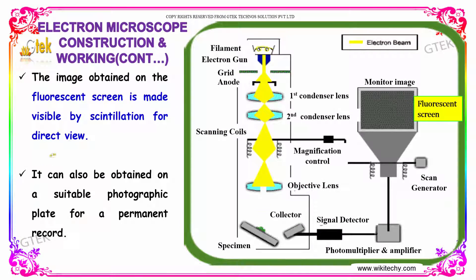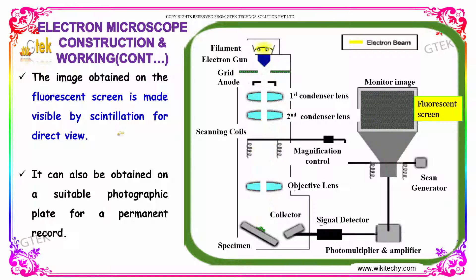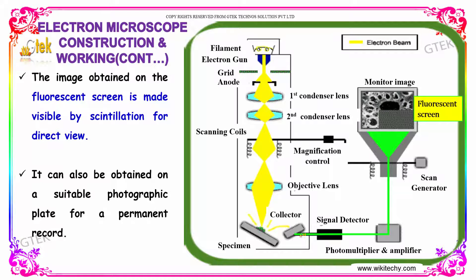The image obtained on the fluorescent screen is made visible by scintillation for direct viewing. It can also be recorded on a suitable photographic plate for a permanent record.